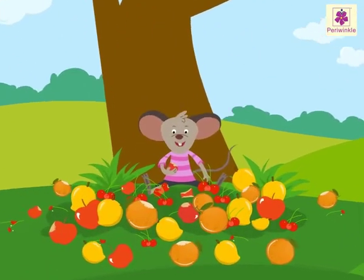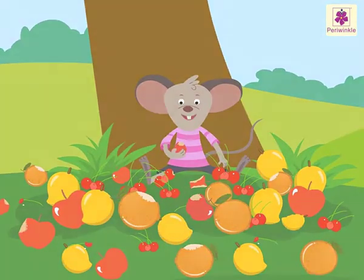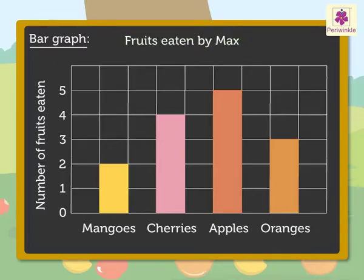Max, the mouse, ate some fruits. Let's read this bar graph. Here, the title 'fruits eaten by Max' tells us the bar graph is about the number of fruits eaten by Max, the mouse.